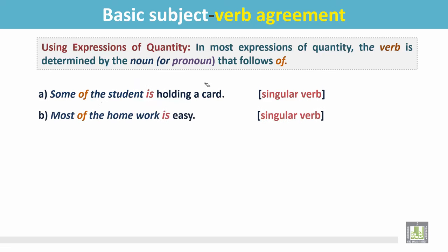'Most of the homework is easy.' 'Homework' is a singular noun that follows 'of,' and since it is singular, the verb is singular: 'is.'